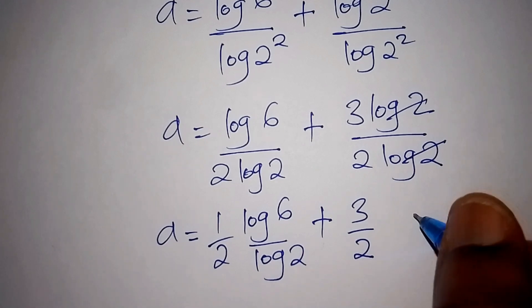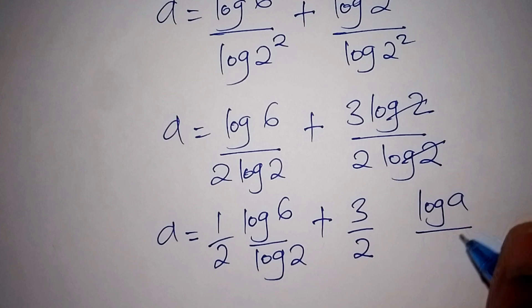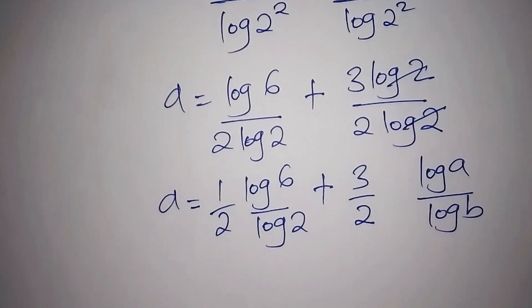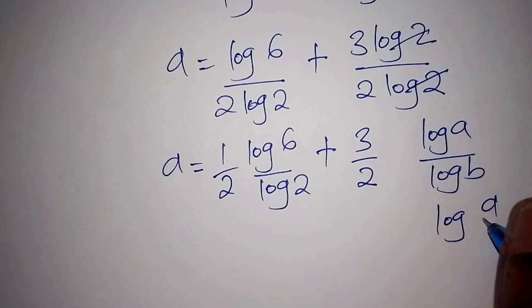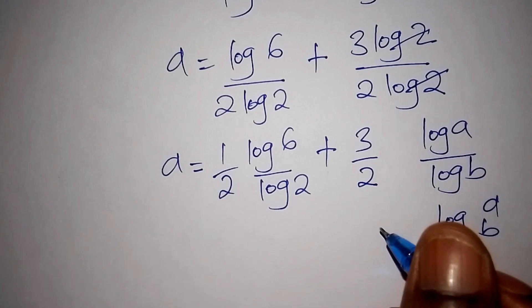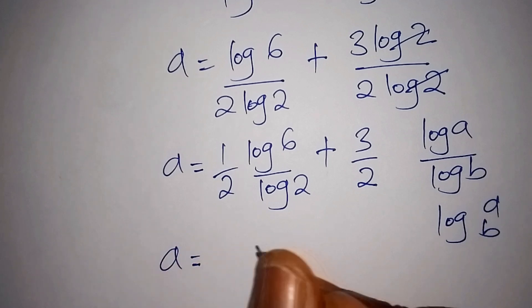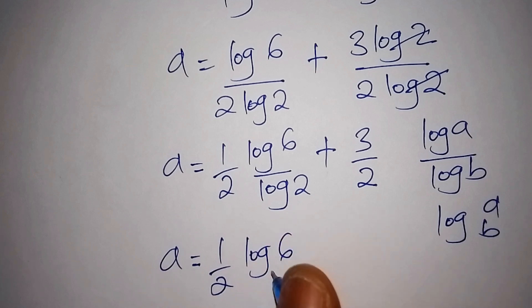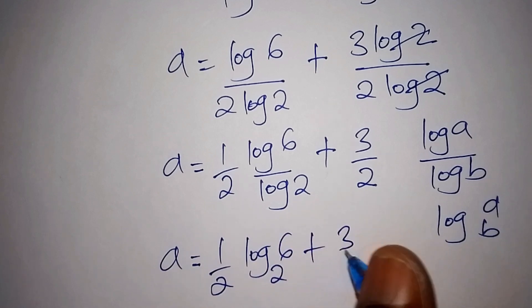Using the change of base rule — log of a over log of b equals log of a to the base of b — we can finally say our value for a equals one half times log of 6 to the base of 2, plus 3 over 2.